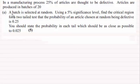And for this part a batch is selected at random. Using a 5% significance level find the critical region for a two-tailed test that the probability of an article chosen at random being defective is 0.25. And you should state the probability in each tail which should be as close as possible to 0.025. And this was worth 5 marks.